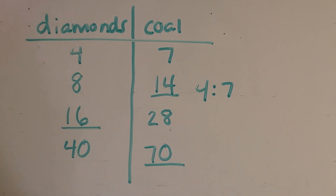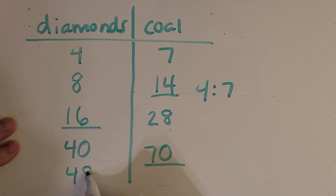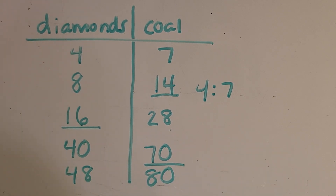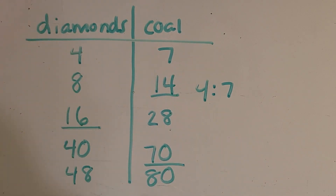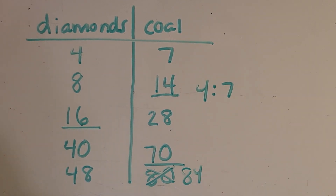Now I've got one more question on the diamonds and coal. Could I find 48 diamonds and 80 coal while keeping that same ratio of four to seven? Some of you are thinking about the pattern — four times 12 and seven times 12. No, we can't. What would we have to find to keep that same four to seven ratio? Seven times 12 is 84. You got it.